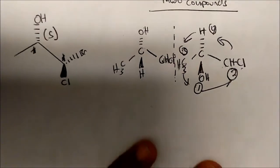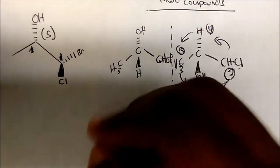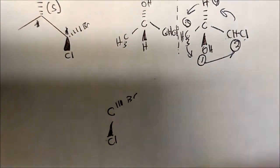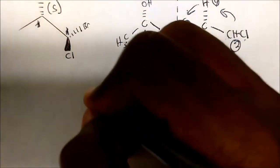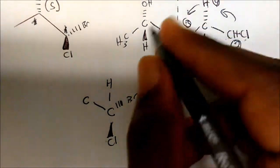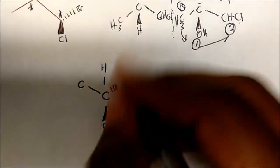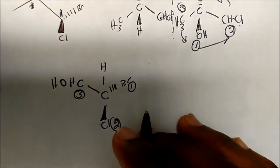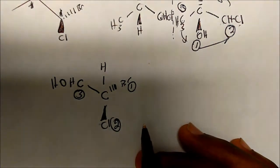Now for the second chiral center. If you look, I have a carbon with bromine going away, chlorine coming out toward us in space, hydrogen here, and a C group — the first thing we hit is a CH. Bromine is heavier than both carbon and chlorine, so bromine is priority one. Chlorine is priority two. The CHOH group is priority three. Notice our lowest priority group is not going away from us again.